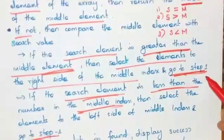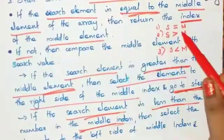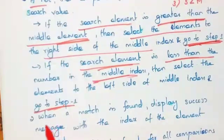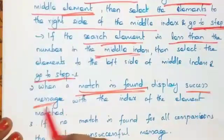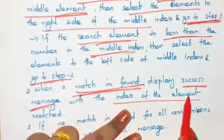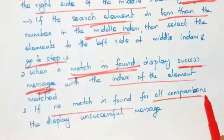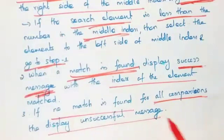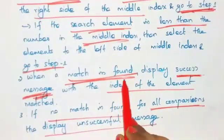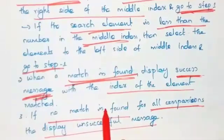Repeat the procedure again and again until your search element is found. When a match is found, display the success message with the index position of the matched element. If no match is found, meaning the search value is not available in the list after all comparisons, display the unsuccessful message — element not found.